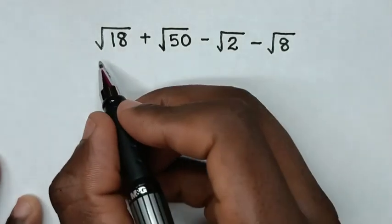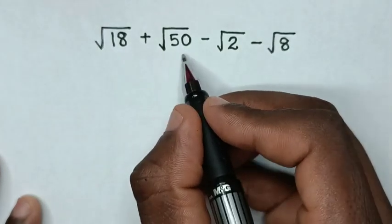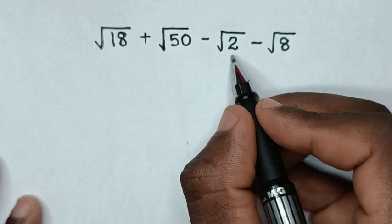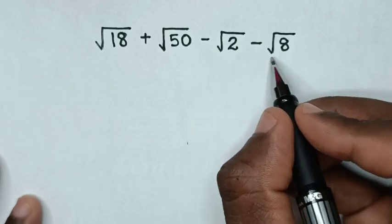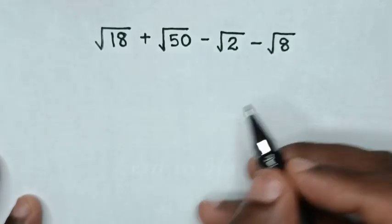Hello! How to solve square root of 18 plus square root of 50 minus square root of 2 minus square root of 8? So,